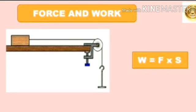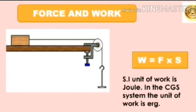W means work, F means force, and S means displacement. In the SI system, the unit of work is Joule. And in the CGS system, the unit of work is erg. So that is the unit for work.